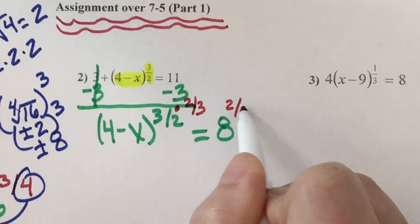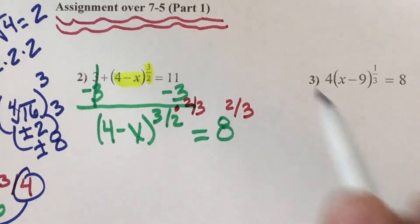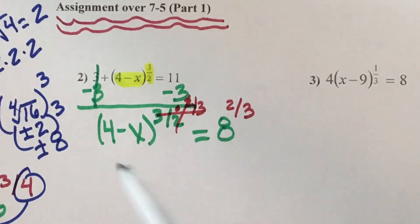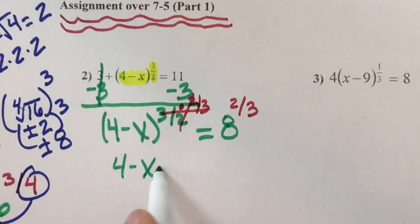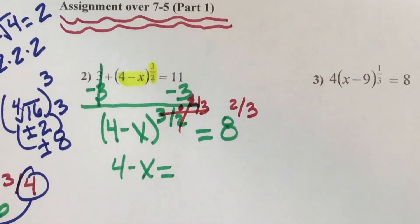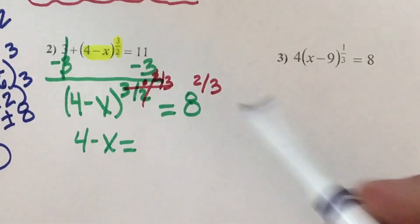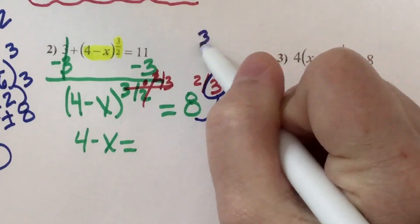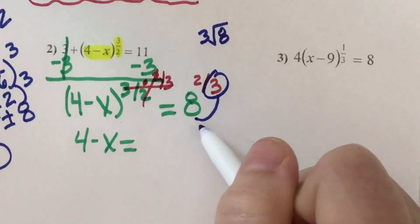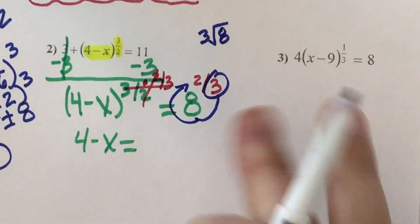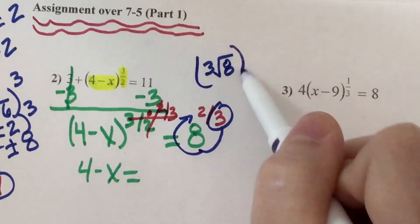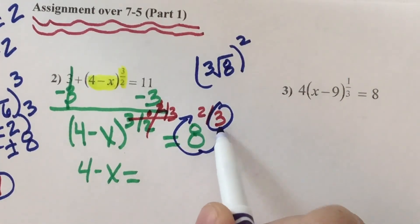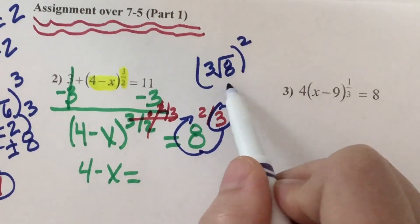I'm going to raise both sides to the 2/3 power. The 3's and 2's cancel — all I'm left with is 4 minus x. This side, I need to go around the world. It's telling me to take the cubed root of 8 and raise it to the 2nd power. Am I taking an even root this time? Nope — that is not an even number, so no plus or minus.